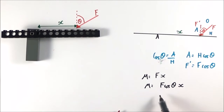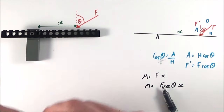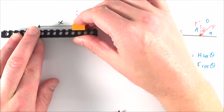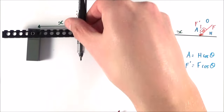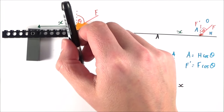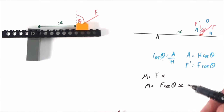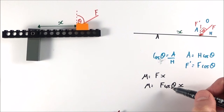If the force is acting vertically rather than at an angle — say a simple beam with a weight acting straight downwards — then theta equals zero and cos theta equals one. So the formula reduces back to M = FX, which confirms that the angled form is the more general version, and the simple vertical case is just a special case of it.